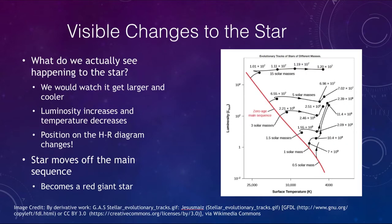So what are we going to see in the star? If we look at this star, we would watch the star have two things: it would get larger and it would get cooler. So as it gets larger, even though it's getting cooler, it's going to actually get brighter, the luminosity is going to increase and the temperature is going to decrease. That means that it's going to change its position on the HR diagram, because the HR diagram is a plot of surface temperature of the star versus the luminosity.